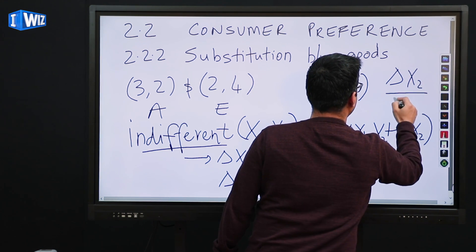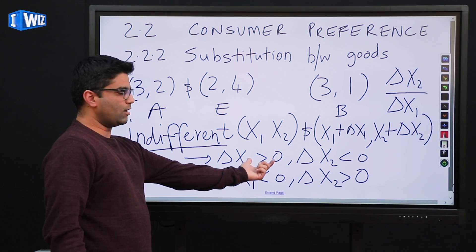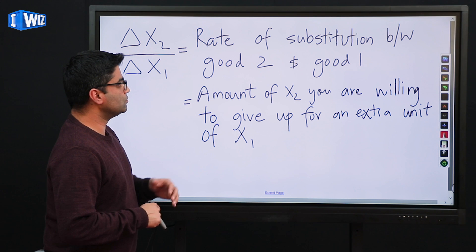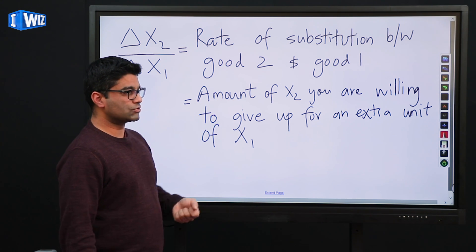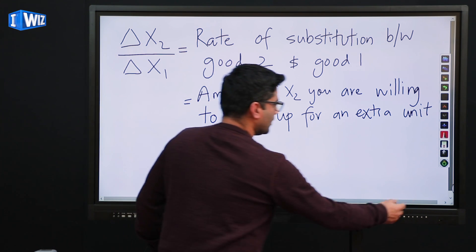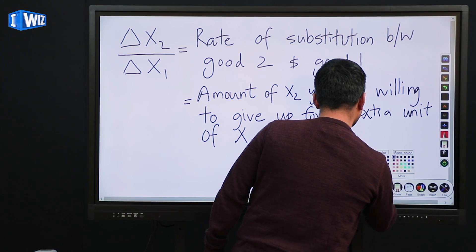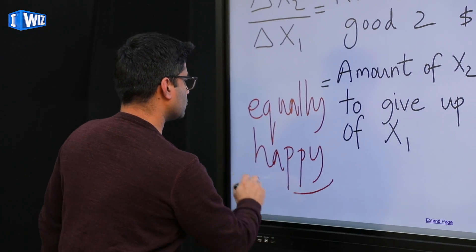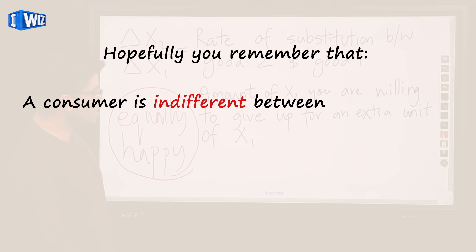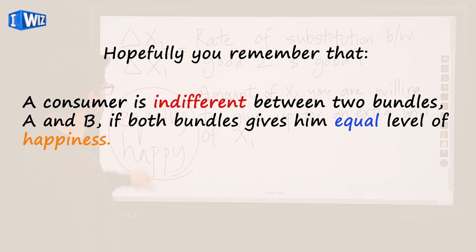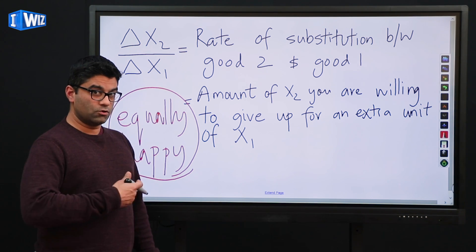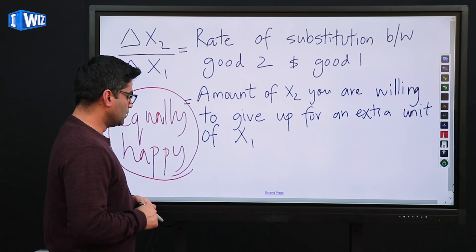The ratio Δx2 over Δx1 has a very important interpretation. This ratio is the rate at which you are willing to substitute good 2 for good 1. What we mean by that is it's the amount of x2 that you are willing to give up to get one more unit of x1, and very importantly, you are going to be equally happy. So when you are indifferent, it's the amount of x2 you are willing to give up to get one more unit of x1 and leave you equally happy. Another way to look at this is: how much are you willing to pay for good 1 in terms of good 2?